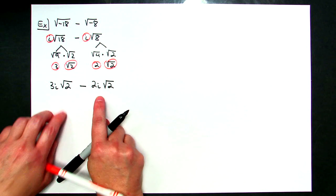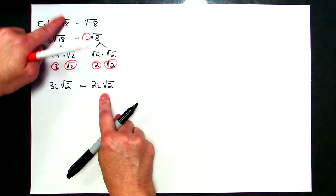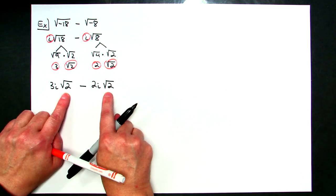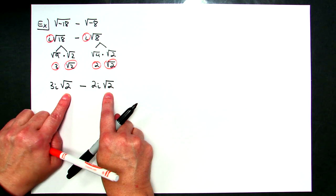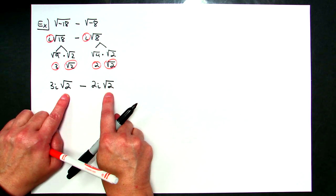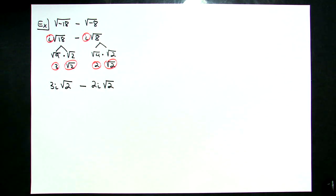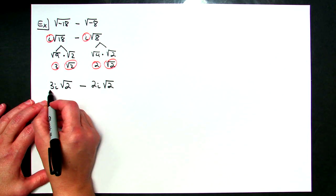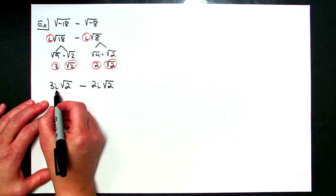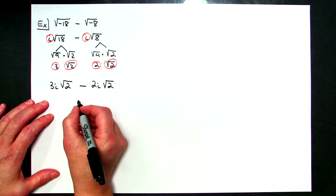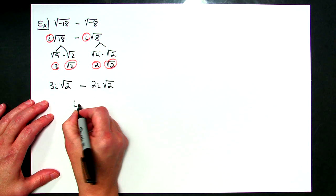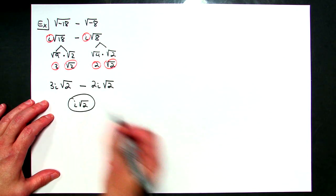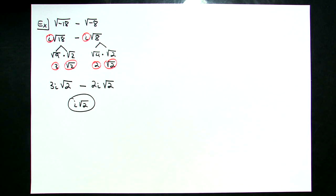Now I've simplified both parts and I have like radicals, so I can subtract them. Subtracting the coefficients in front of the radical: 3i minus 2i gives me i, or 1i√2. So the final answer is i√2.